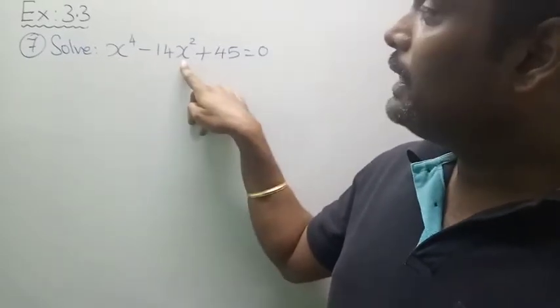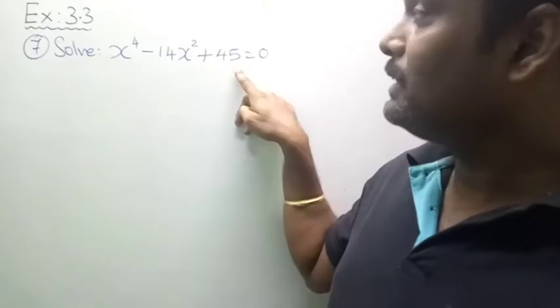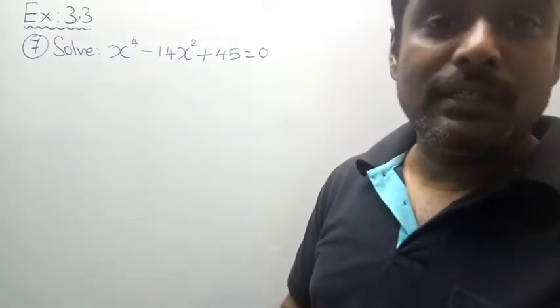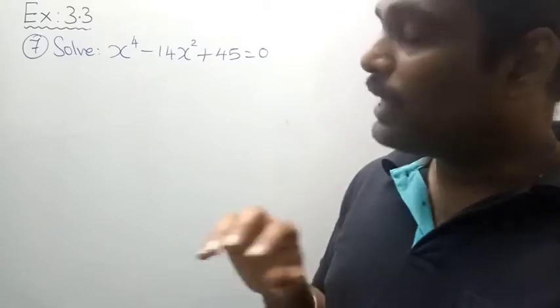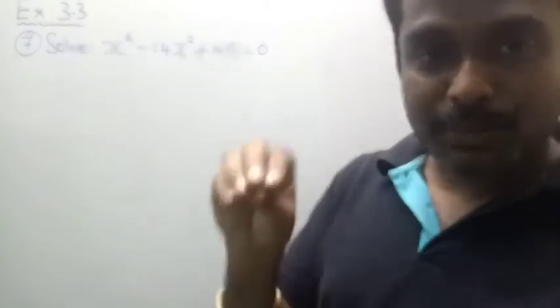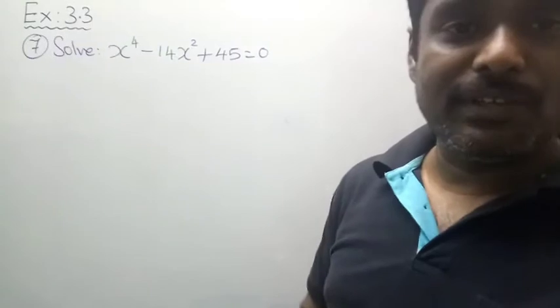x⁴, x², and this is constant. There is no odd coefficient of x. So if I am going to declare my x² as a particular variable, then it will be a quadratic equation.